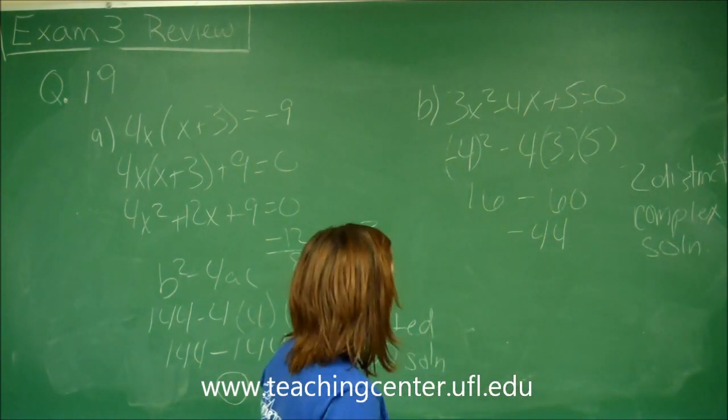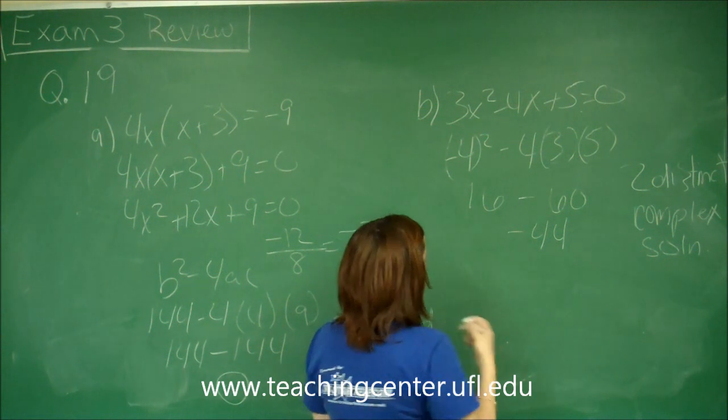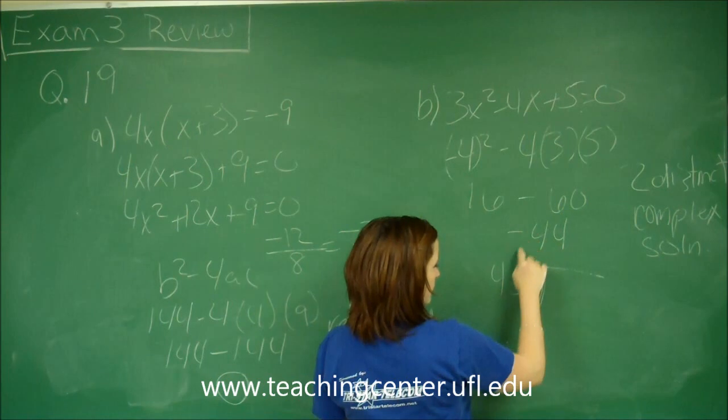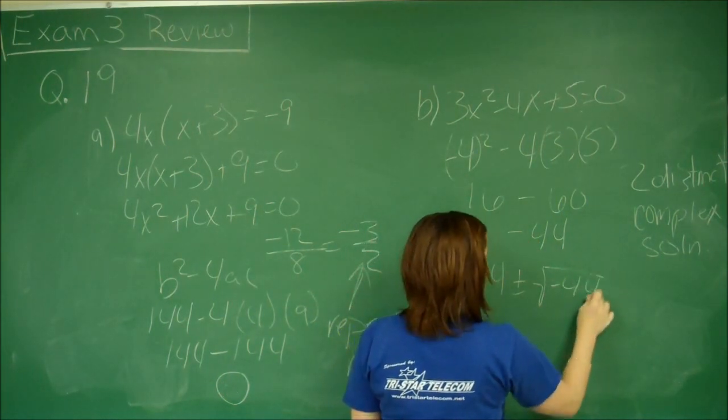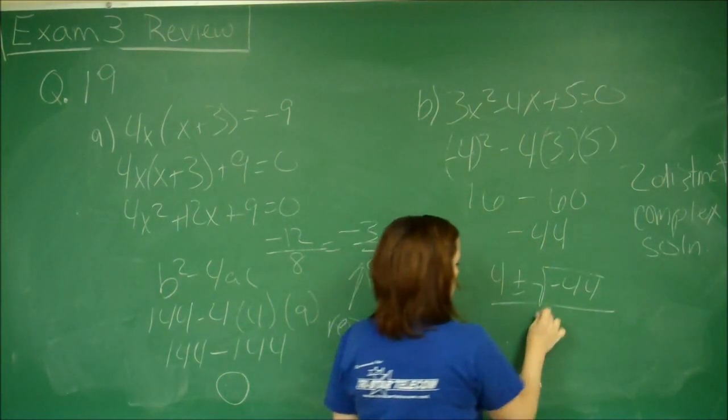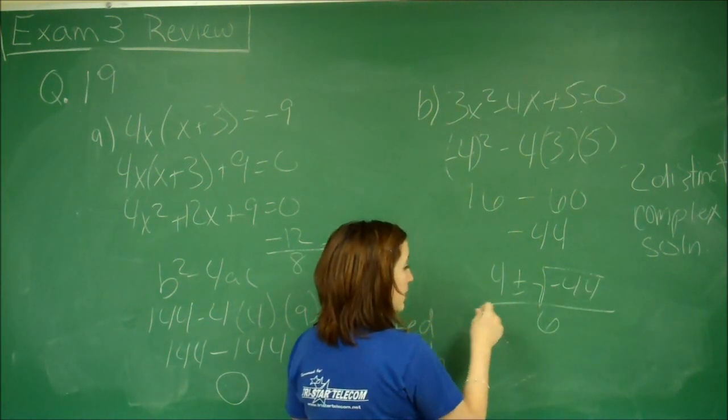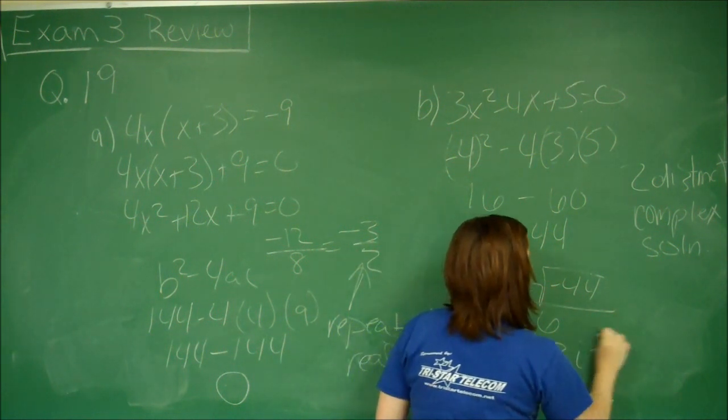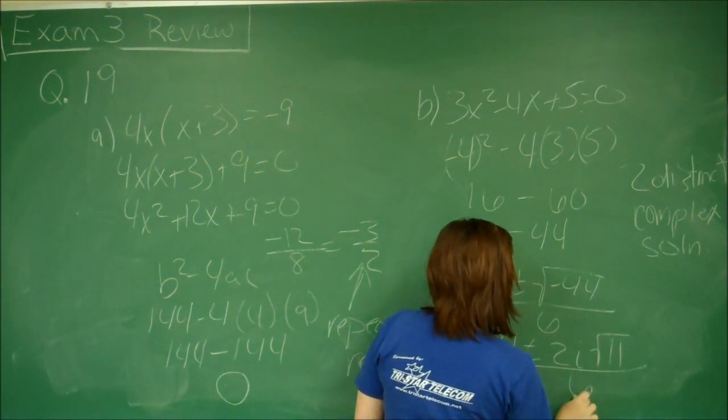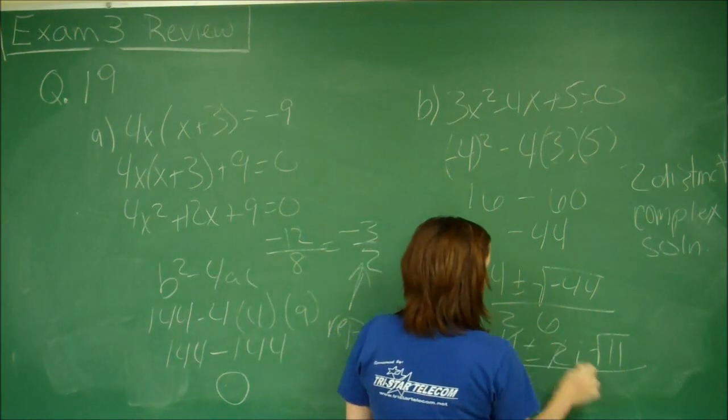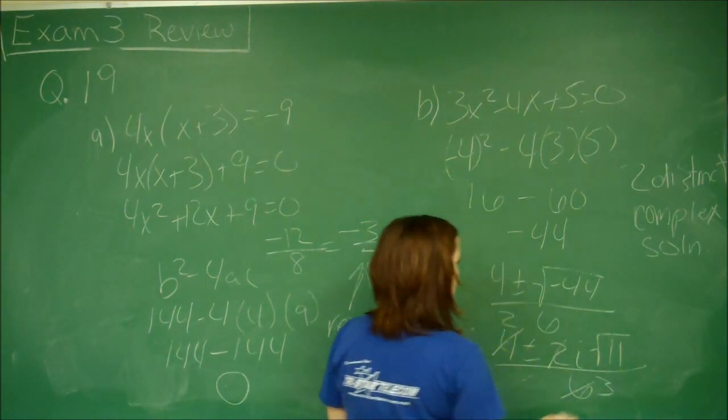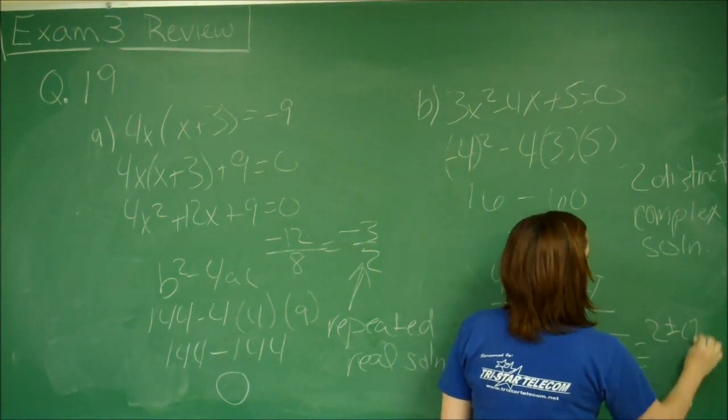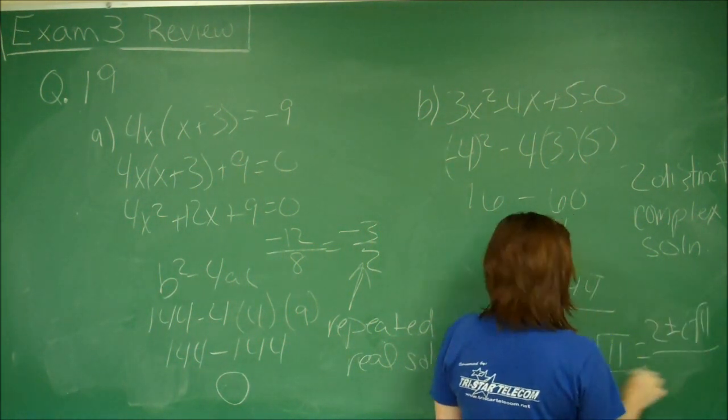And I do that and now I can just do my whole quadratic formula. So y equals negative b plus or minus the square root of b squared minus 4ac, which we already did. So that's negative 44, all over 2 times a which is 6. And so I can bring out a 2i. And so I'm left with 4 plus or minus 2i square root of 11 over 6. And you can simplify each of these by a value of 2. So your answer is 2 plus or minus i square root of 11 all over 3.